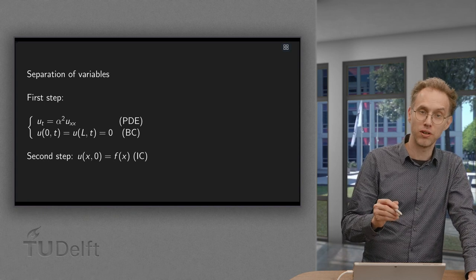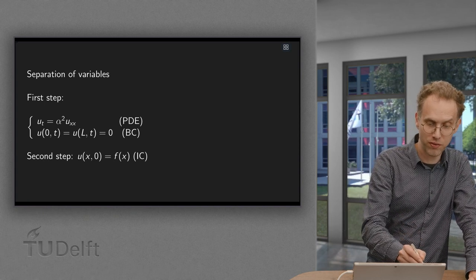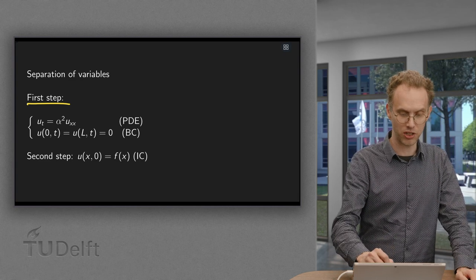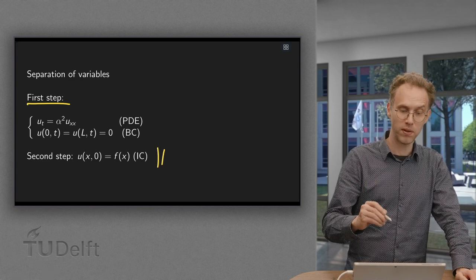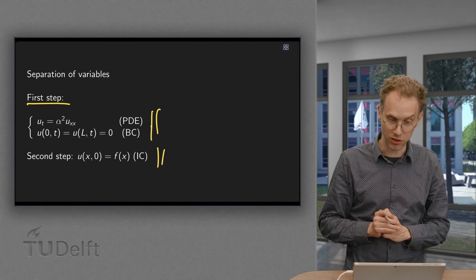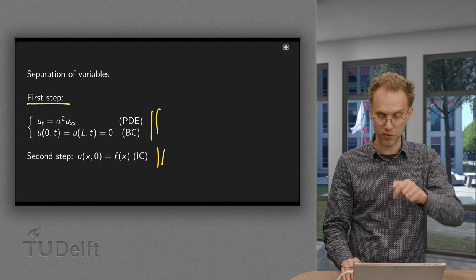In our separation of variables, first we do the first step where we don't care yet about the initial condition. So in the first step we only care about the PDE and the boundary conditions. The initial condition will come later.